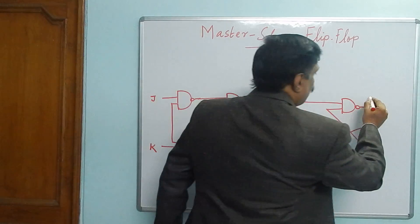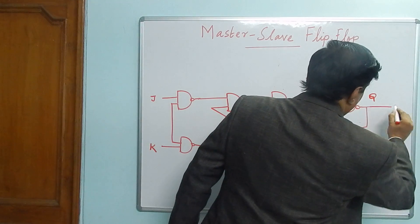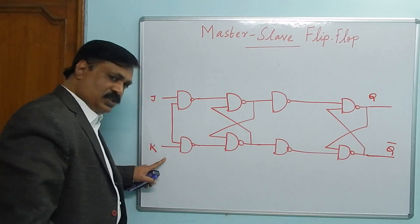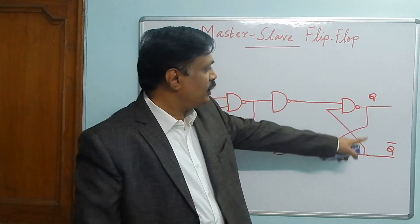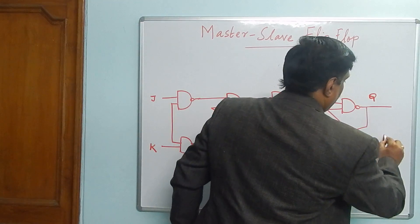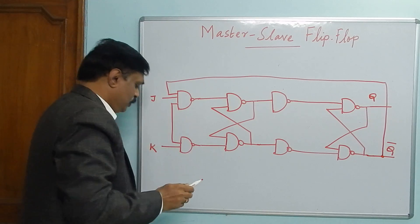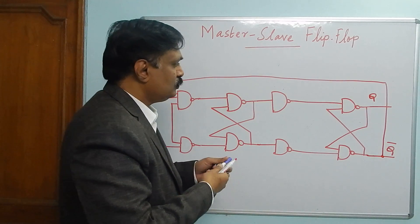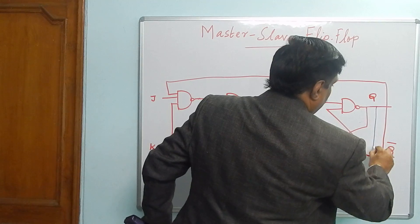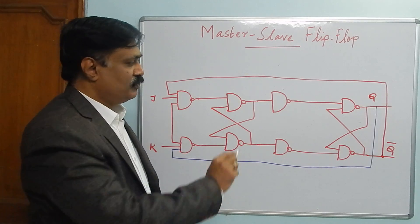In a JK flip-flop we have the feedback connection from Q and Q-bar. Let us extend Q and Q-bar. Q is connected to the K input and Q-bar is connected to the J input. Take a line here and connect here for the feedback connection.